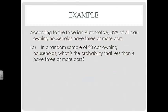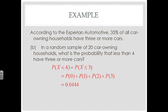Now we want the probability that fewer than four households have three or more cars. Less than four doesn't include four, so X < 4 is equivalent to X ≤ 3 for this discrete variable. We sum P(0) + P(1) + P(2) + P(3) using the formula for each value and add them up, getting 0.0444. In class we'll discuss how to plug this into the calculator easily.